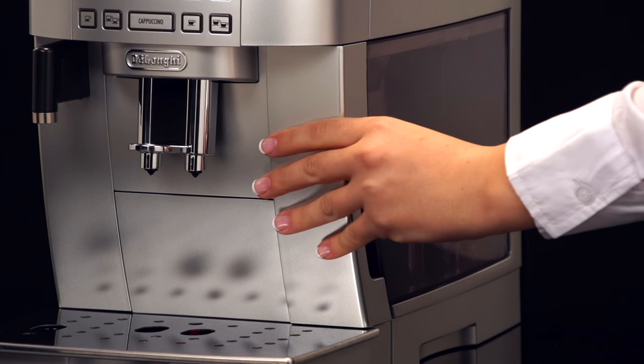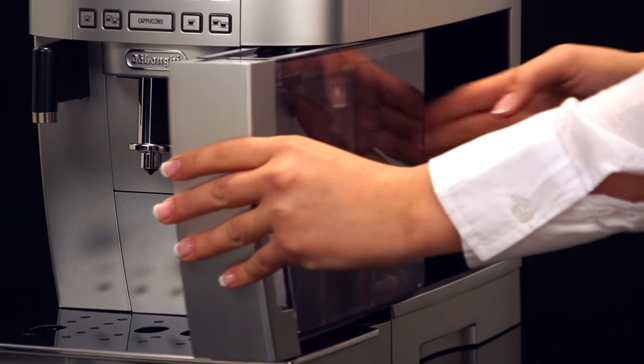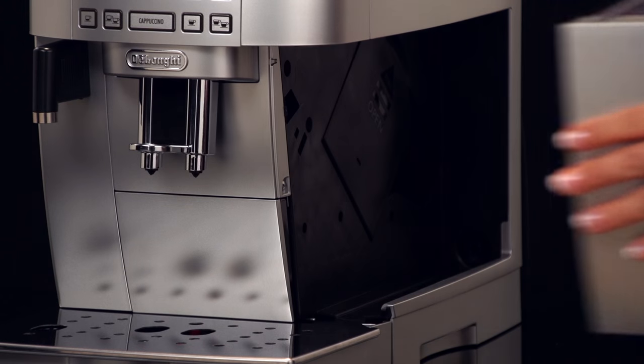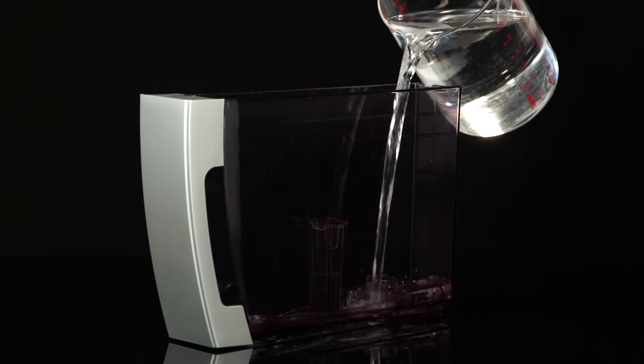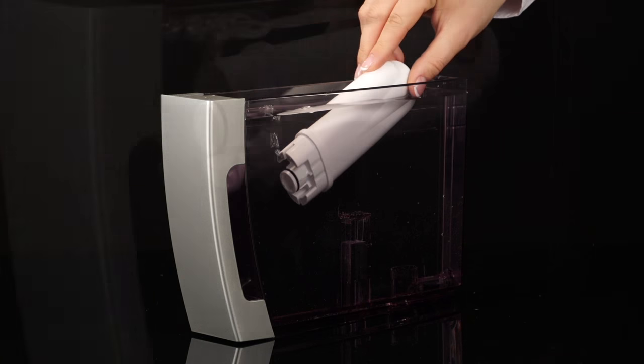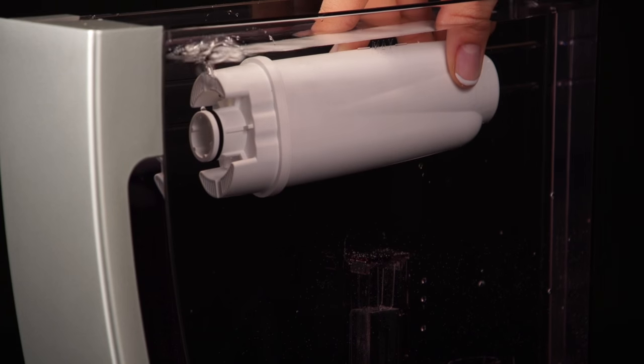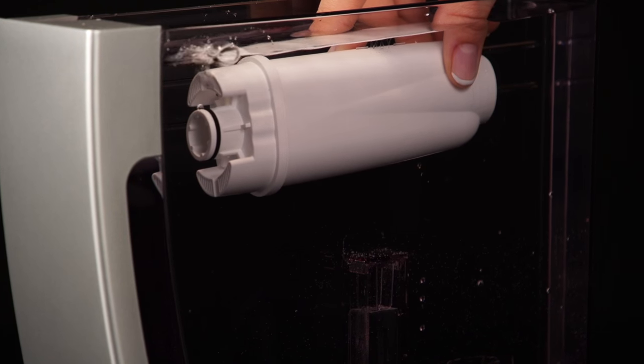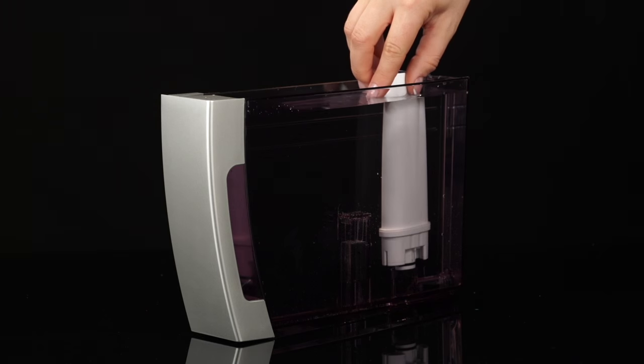Extract the tank from the appliance and fill with water. Insert the filter in the water tank and immerse it completely, sloping it to enable the air bubbles to escape. Insert the filter in the filter housing and press as far as it will go.